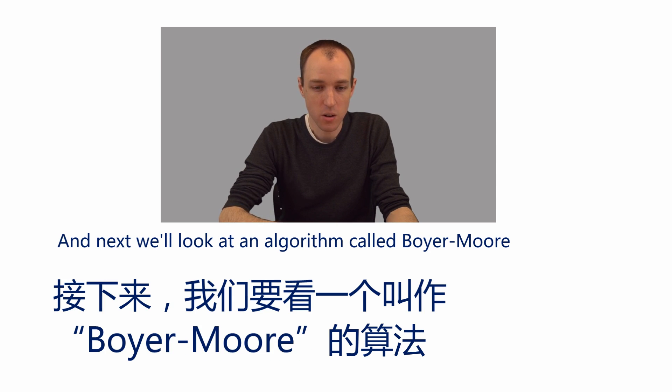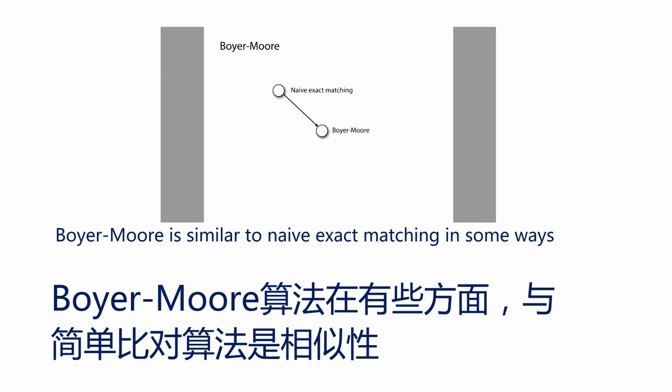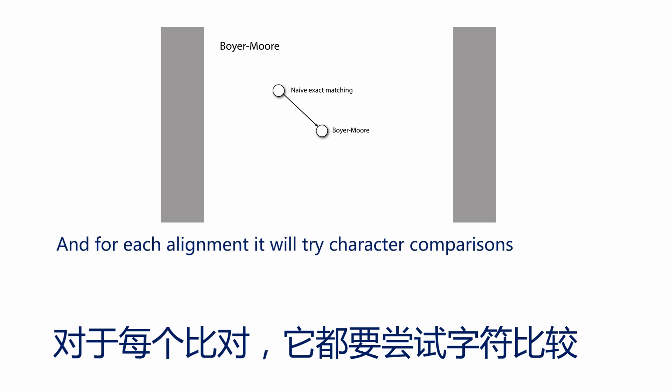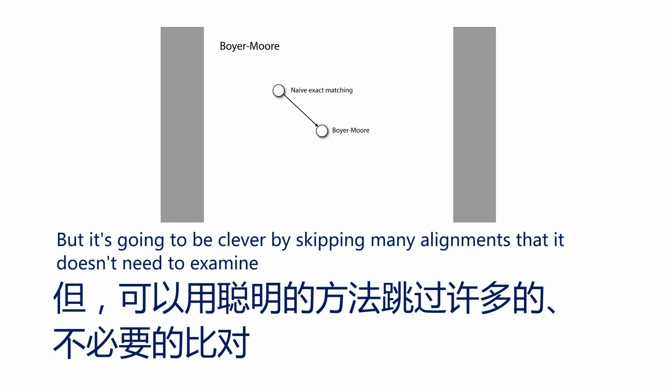Next, we'll look at an algorithm called Boyer-Moore. Boyer-Moore is similar to naive exact matching in some ways — it's still going to try alignments, and for each alignment it will try character comparisons, but it's going to be clever by skipping many alignments that it doesn't need to examine.